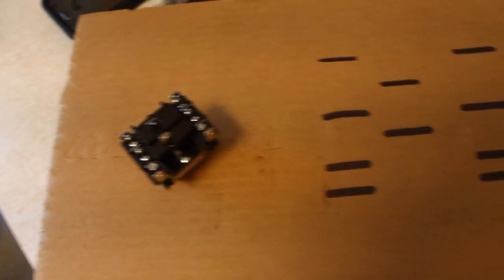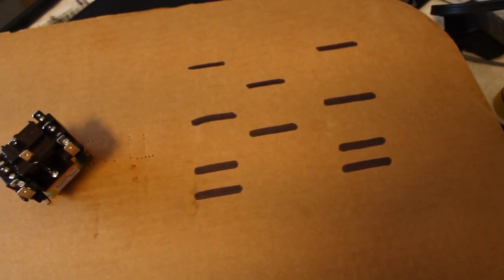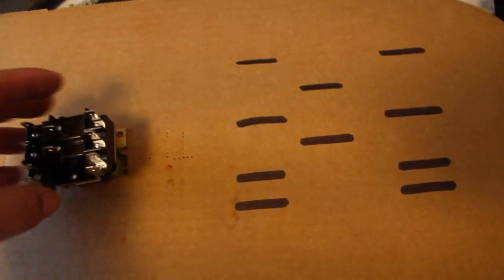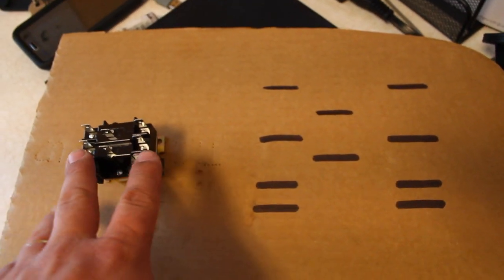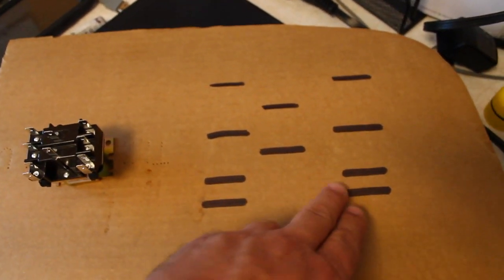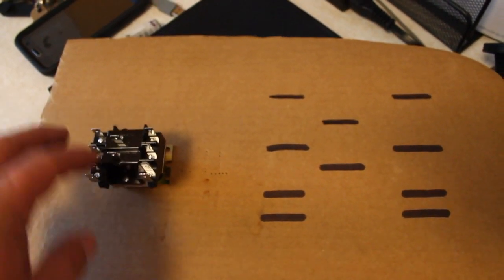Here is our double pole, double throw relay, and here is my expert drawing of the pins on top of this relay. As you see, there's four here at the base: one, two, three, four. That is the coil of the relay.